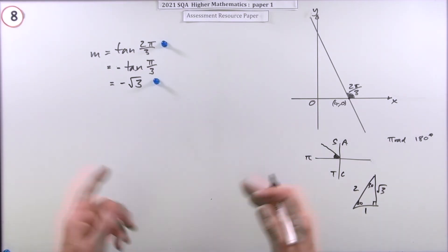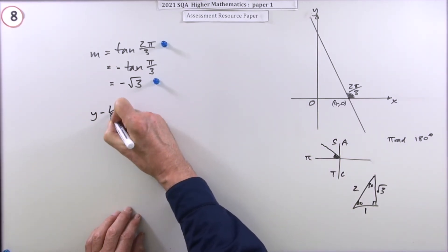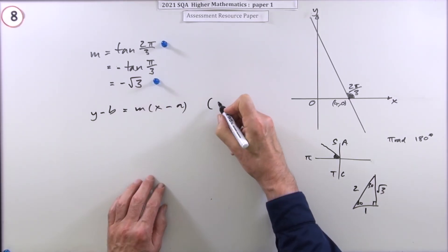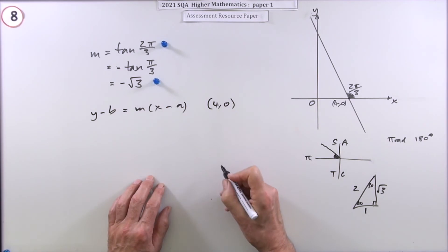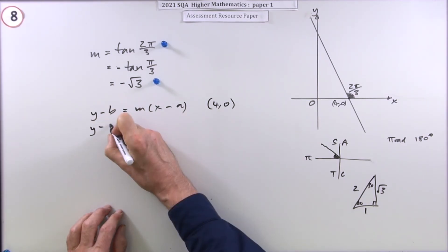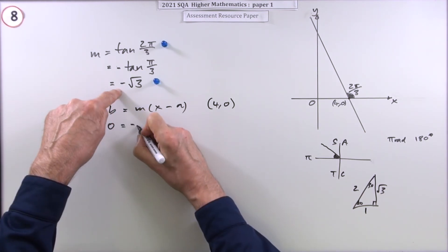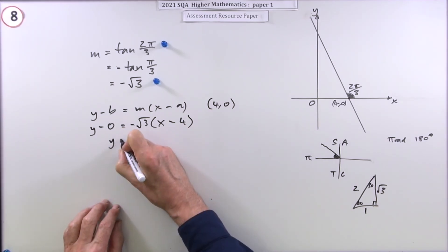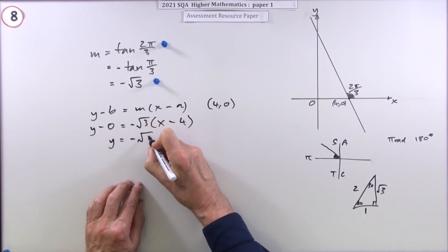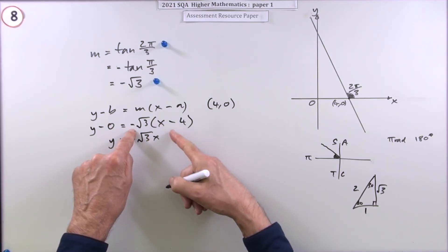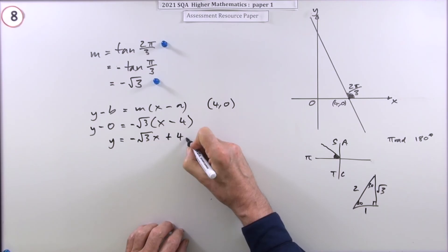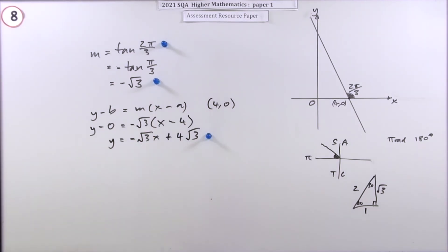So for the line, you're just going to say y minus b equals m times x minus a, where the point you're going to use is (4, 0) and the gradient I've got stated above as that. So y minus the y coordinate will be the gradient times x minus the x coordinate. Just tidy it up, so it's negative root three x, and then it's going to be plus four times root three. That's the third mark.